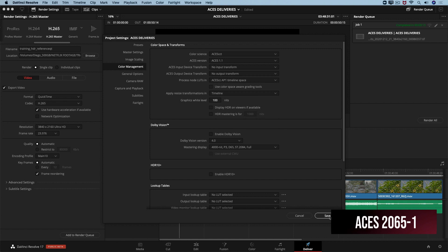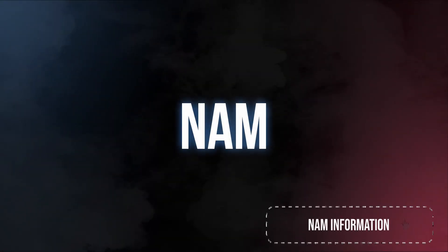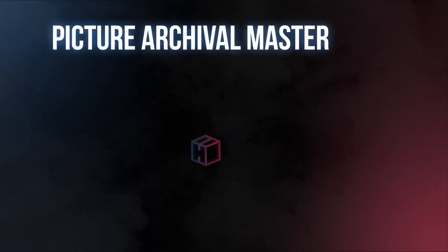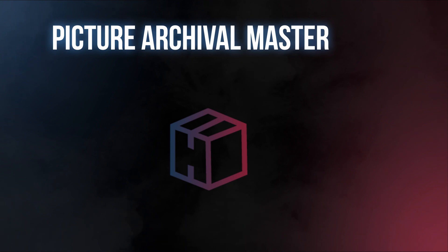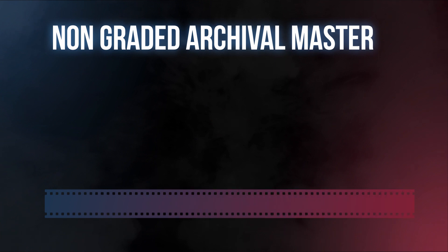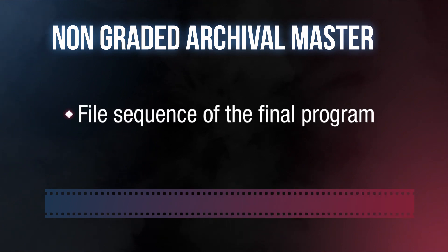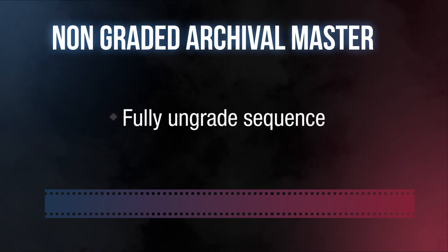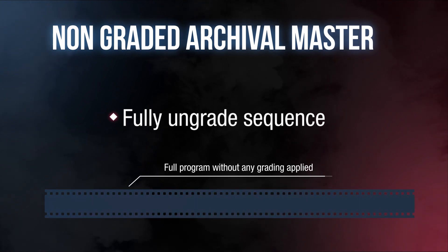Now we can render out deliverables for exchanging ACES data like VFX or NAMMs. What is a NAMM? The NAMM is a Picture Archival Master for Netflix — it stands for Non-Graded Archival Master. It is a file sequence of the program that matches the IMF picture conform and duration, but all the color and effects applied in the online process shall be removed. We can say it's a master of the program without any grading applied.